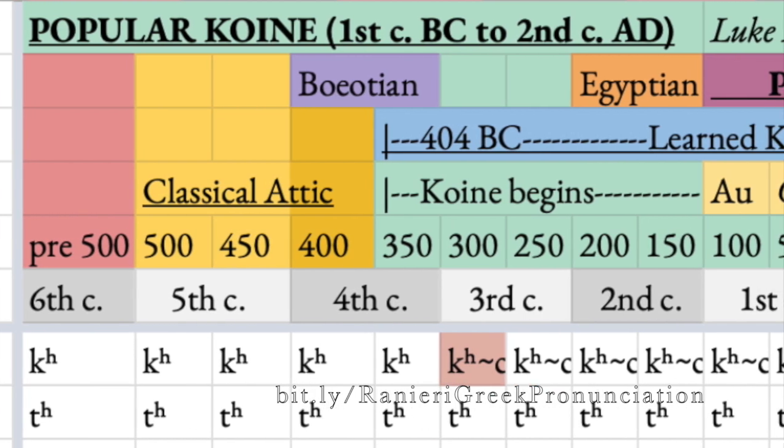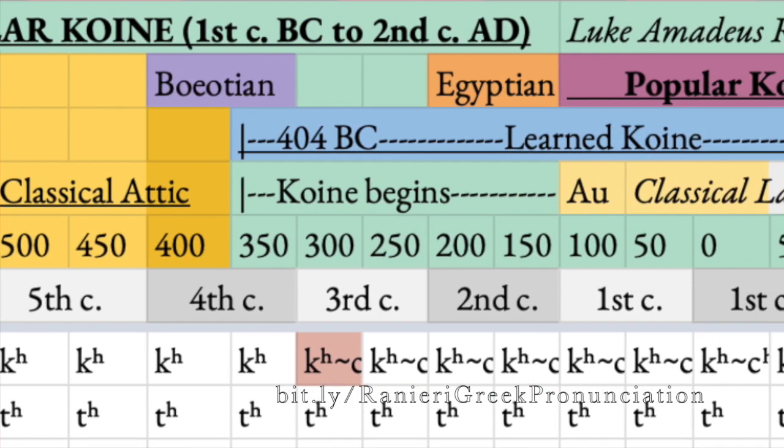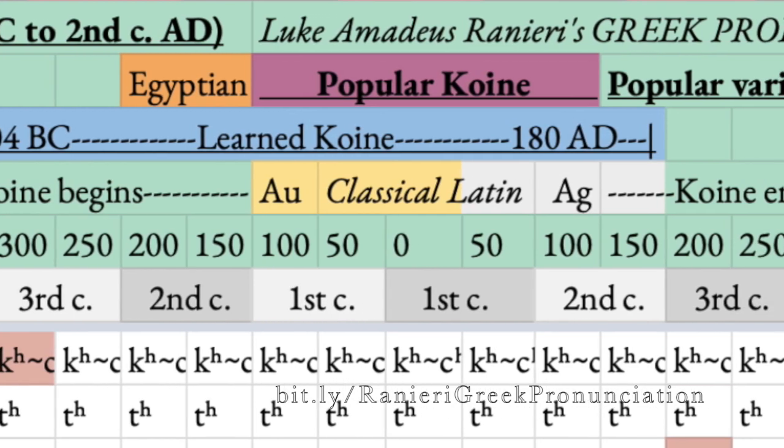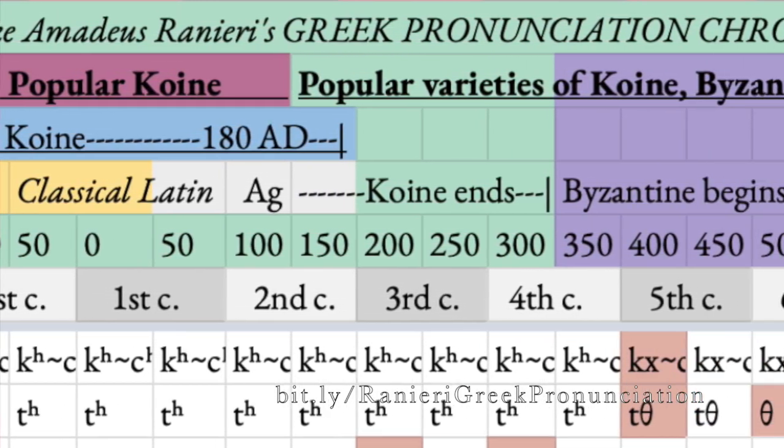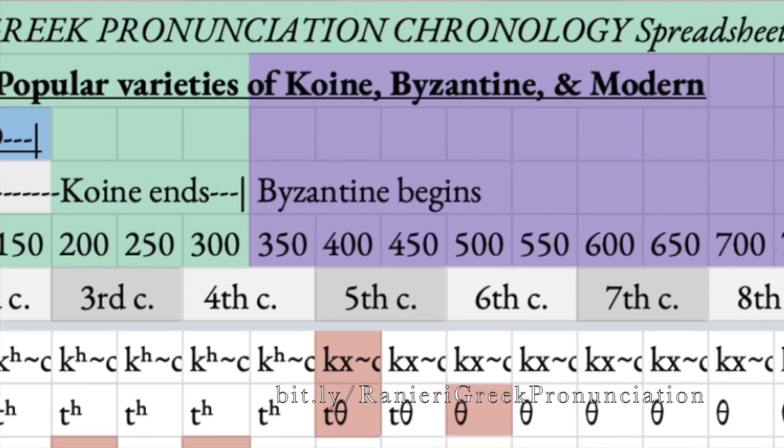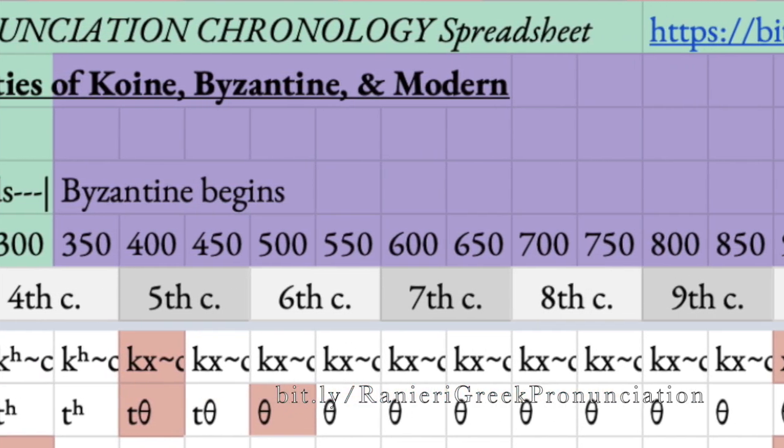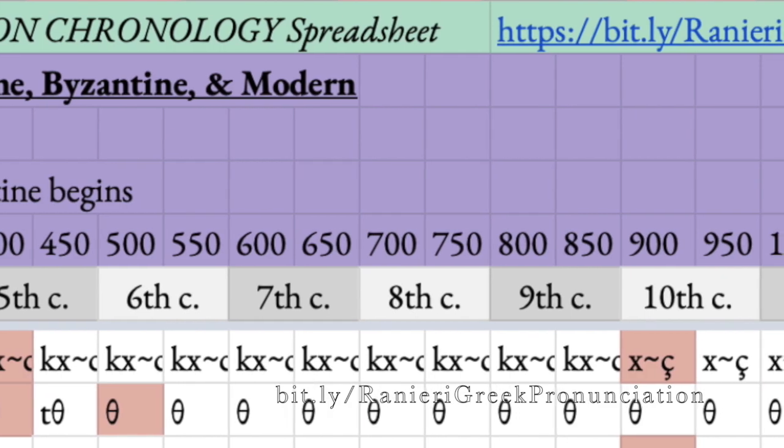However, the sound of the letter chi doesn't change from ka into cha until at the very earliest about the beginning of the Byzantine era, the 4th or 5th century AD, and certainly does not really become that fricative pronunciation until the 10th century AD. It's possible it was happening earlier — it may have been an affricate, something like ka in the early Byzantine period and later became ha. The point is that these sounds don't go together. The vowel ai and the sound of ha are separated by hundreds of years.